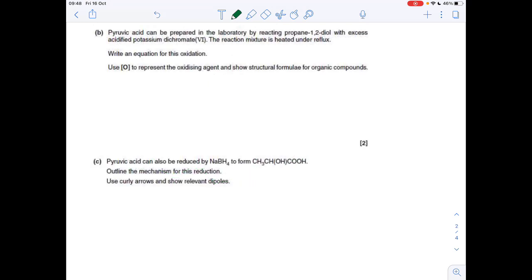Next question: pyruvic acid can be prepared in the lab by reacting propane 1,2-diol with excess acidified potassium dichromate and it's heated under reflux. So we'll just get propane 1,2-diol and we know the structure of pyruvic acid because it was given at the top of the question. The first bit, we're just going to look at each alcohol group and how it will be oxidised under reflux.